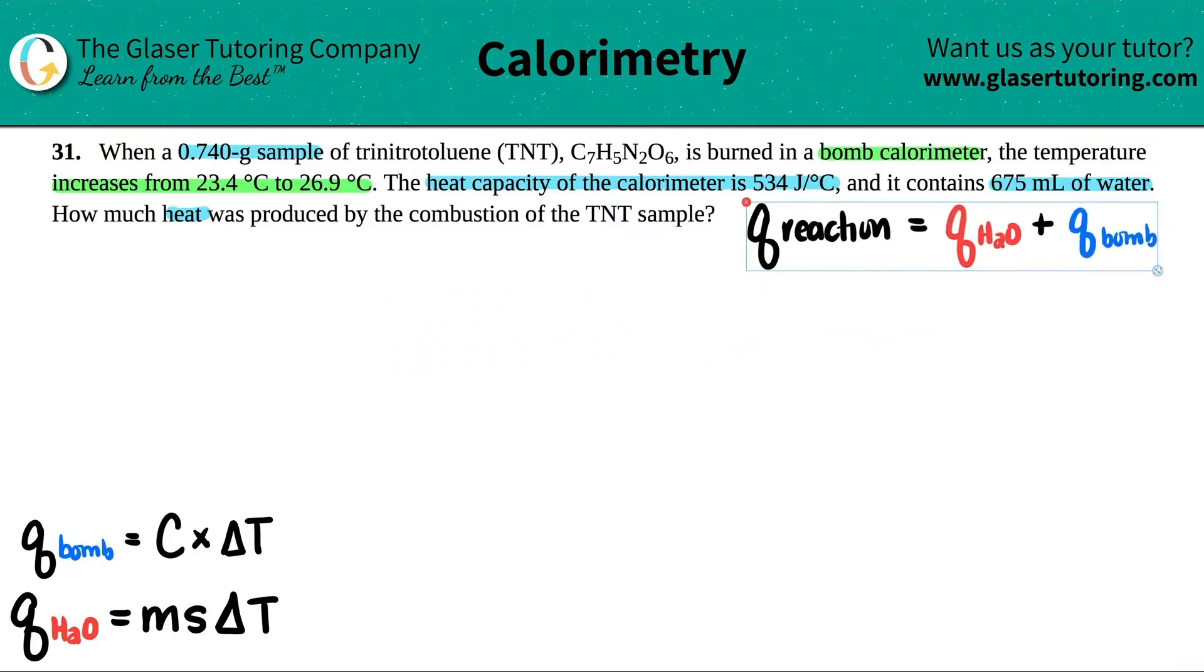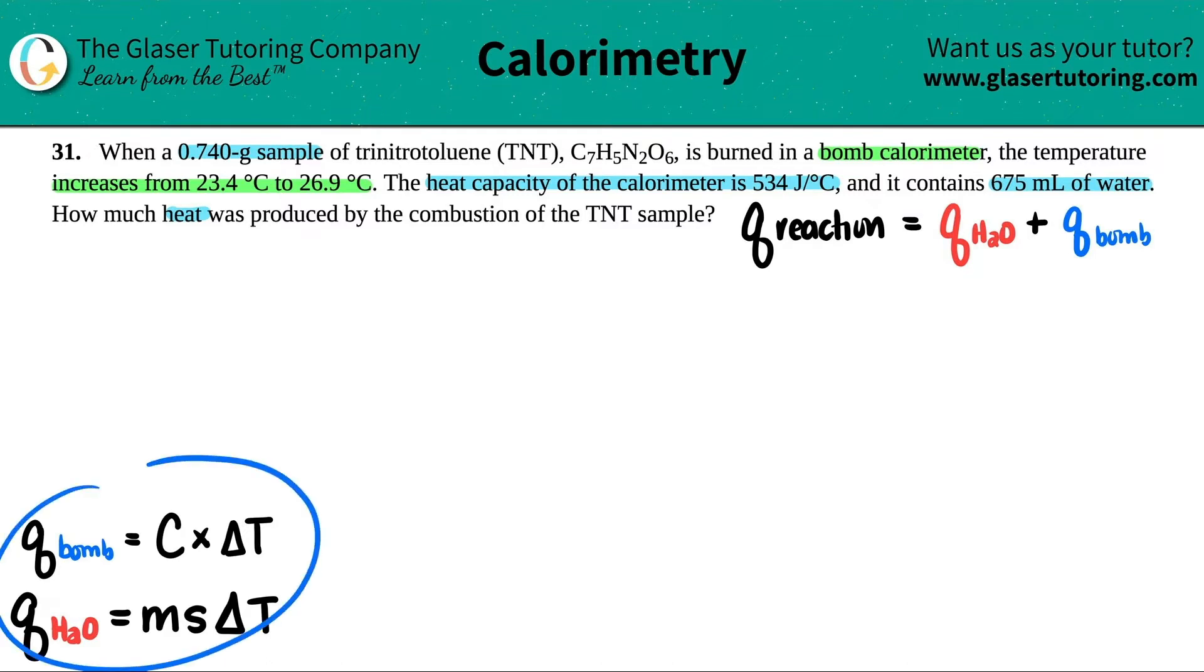And maybe I'll just put this over here. We need to find the total amount of heat, AKA the total big Q. We need to find the heat specifically from the water and we need to find this heat specifically from the bomb calorimeter. So there's two different formulas that we got to work here. I put it down at the bottom.